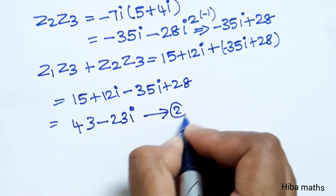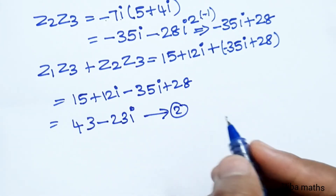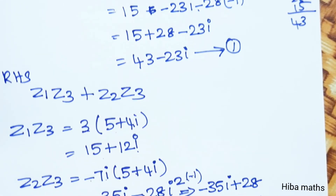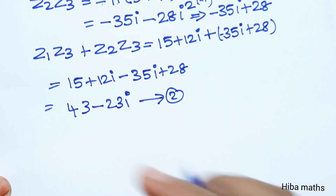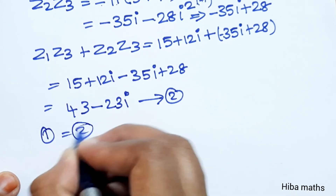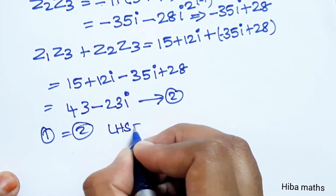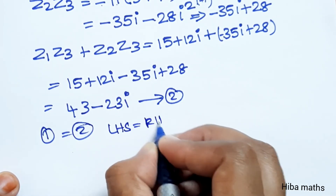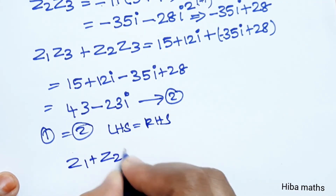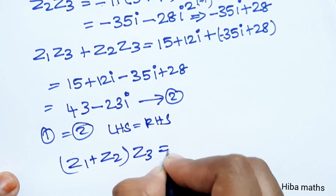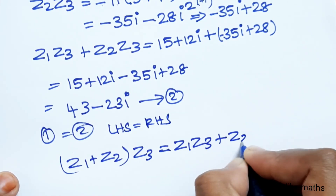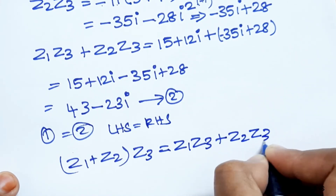This is our second equation. Comparing: first result is 43 minus 23i, second result is 43 minus 23i. So equation 1 equals equation 2, LHS equals RHS. Therefore (z1 plus z2) into z3 is equal to z1·z3 plus z2·z3. Hence proved. Thank you so much for watching.